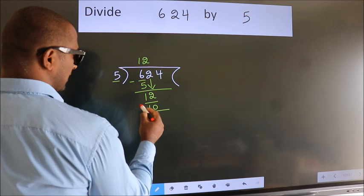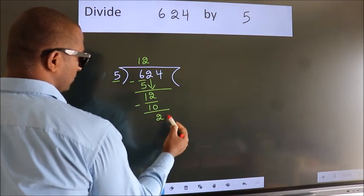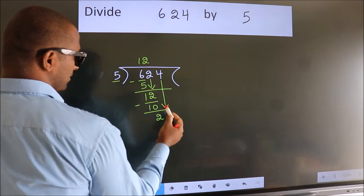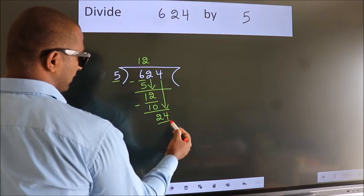Now we subtract. We get 2. After this, bring down the beside number. So 4 down. So 24.